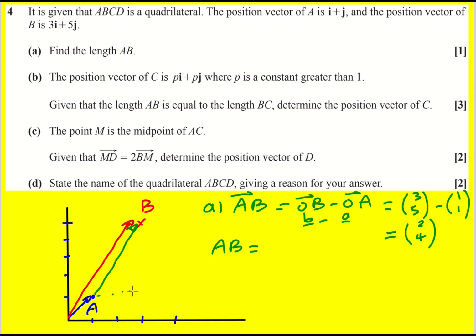Because we go along 2 and up 4, we can create this right angle triangle. 2 squared plus 4 squared, square root here, which gives root 20. You can simplify it to 2 root 5 if you want, but I'm just going to leave it as root 20.